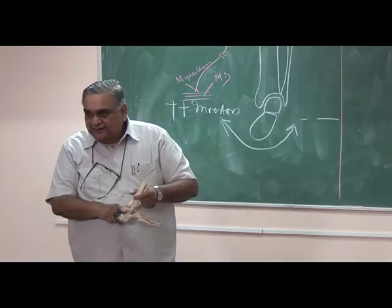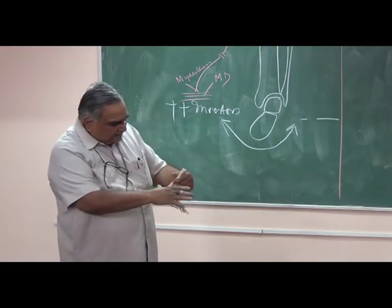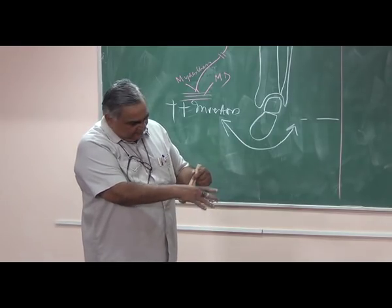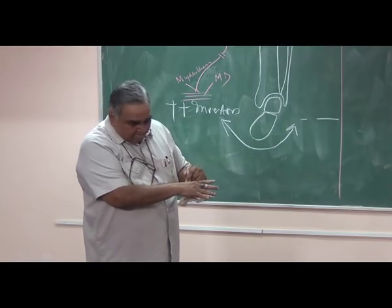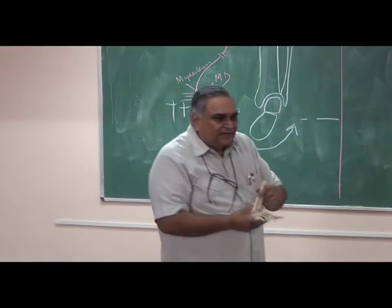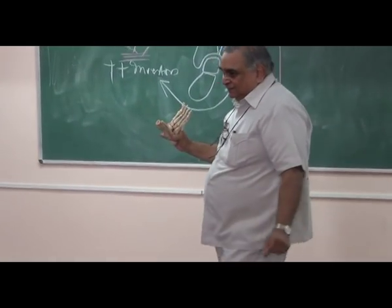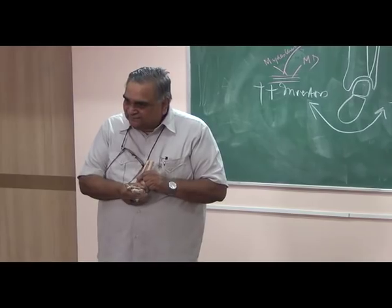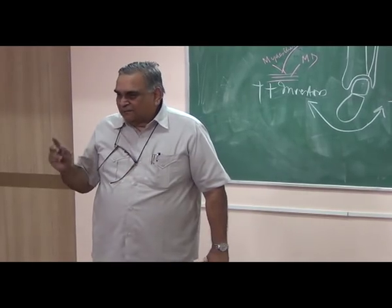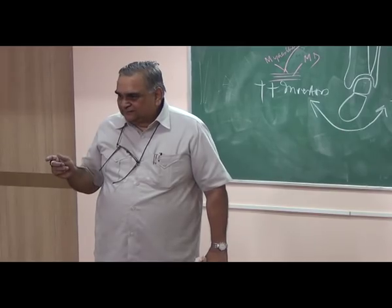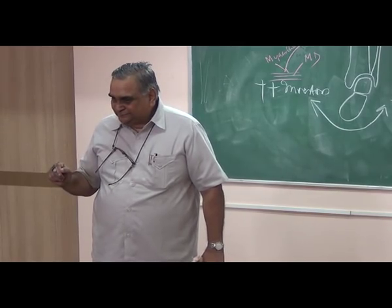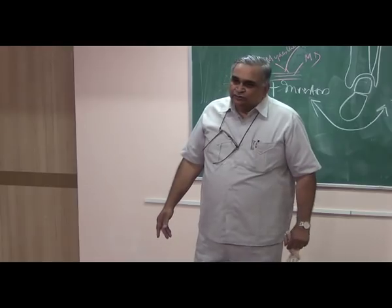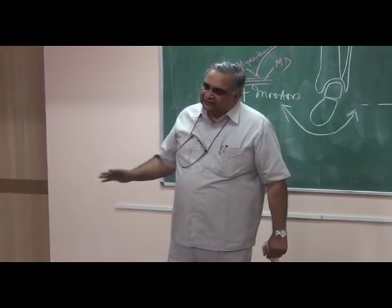Then equinus is corrected by tendo Achilles tenotomy. Initially the thumb used to be on the talus, which was called Kite's splinting. Now it is on the head of the talus — this Ponseti method has literally obviated the need for surgery in congenital club foot. You retain by above-knee plaster with knee in 90 degree flexion, change the plaster weekly, and usually in 2 to 3 months you have corrected the CTEV.